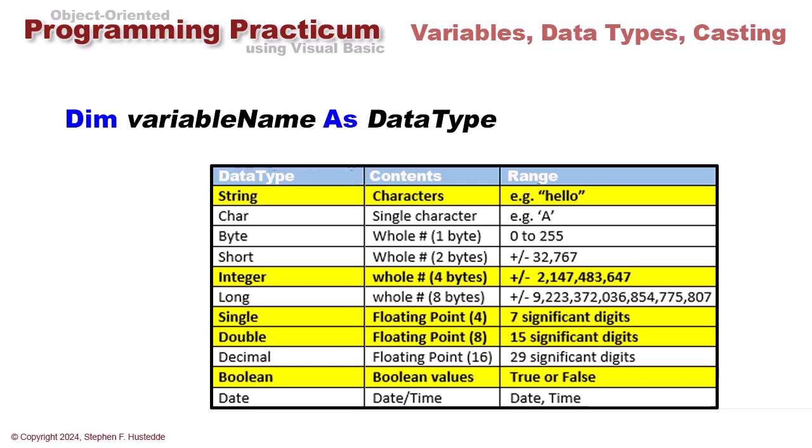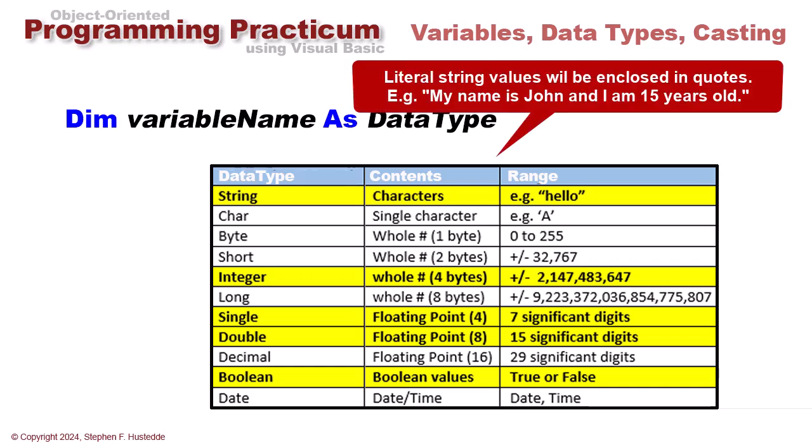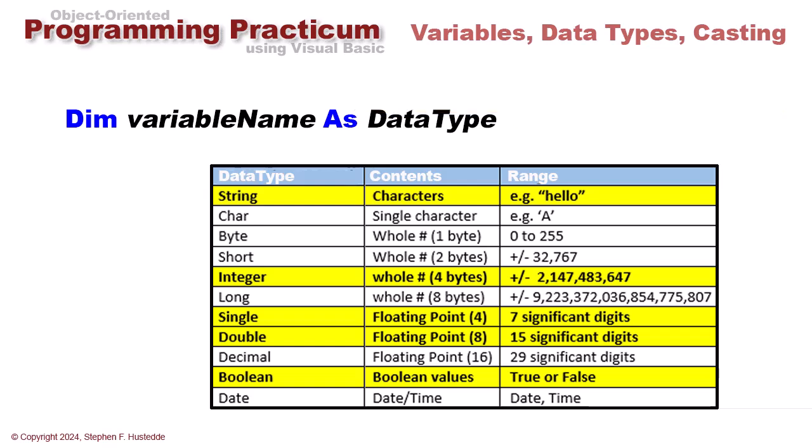The data types we can assign are many. Here are the main ones. The ones we're going to mostly work with in this class are highlighted in yellow. We're going to work with strings, which contain alphanumeric text data characters such as the word "hello". The amount of space allocated is based on the number of characters, so each character takes a byte of storage. The word hello in a string variable will take five bytes to store it.